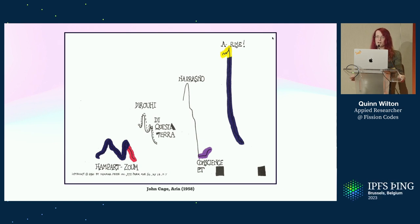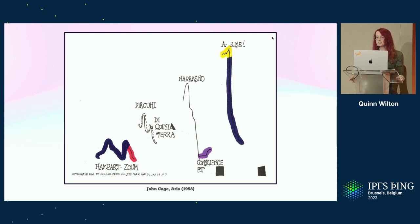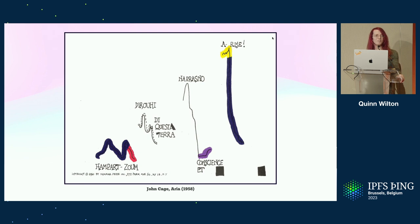Aria is a 1958 composition by John Cage. The work consists of 20 pages of abstract lines, colors, and disjoint lyrics spread across languages like Armenian, French, and Russian. The notation is as absurd as it is subjective, and the result is a piece of music which no two performers will ever interpret in the same way.